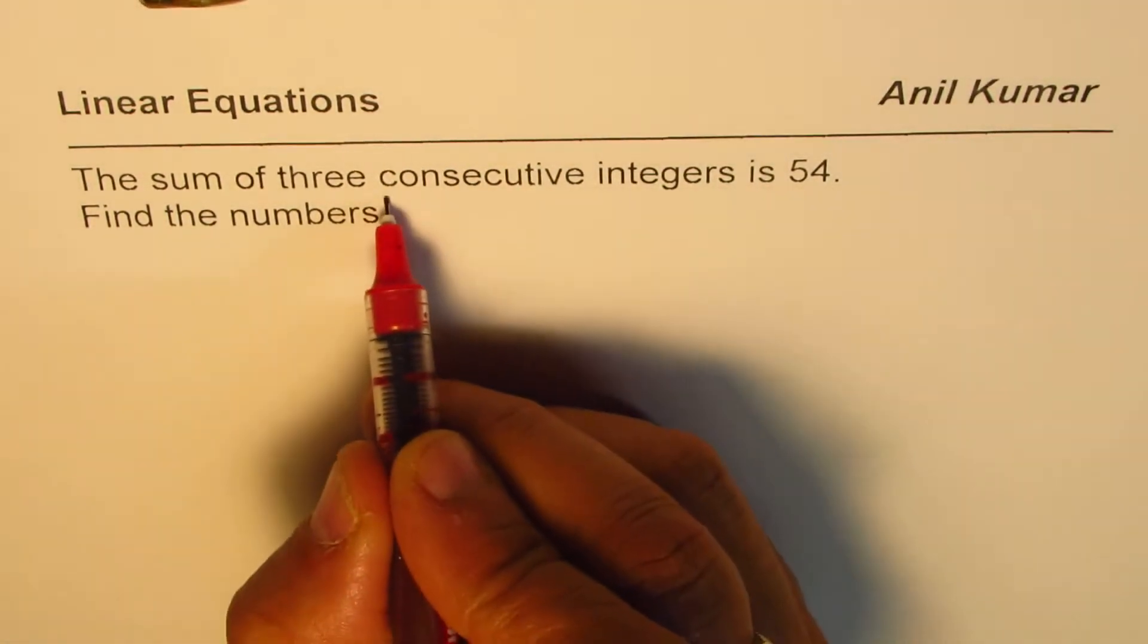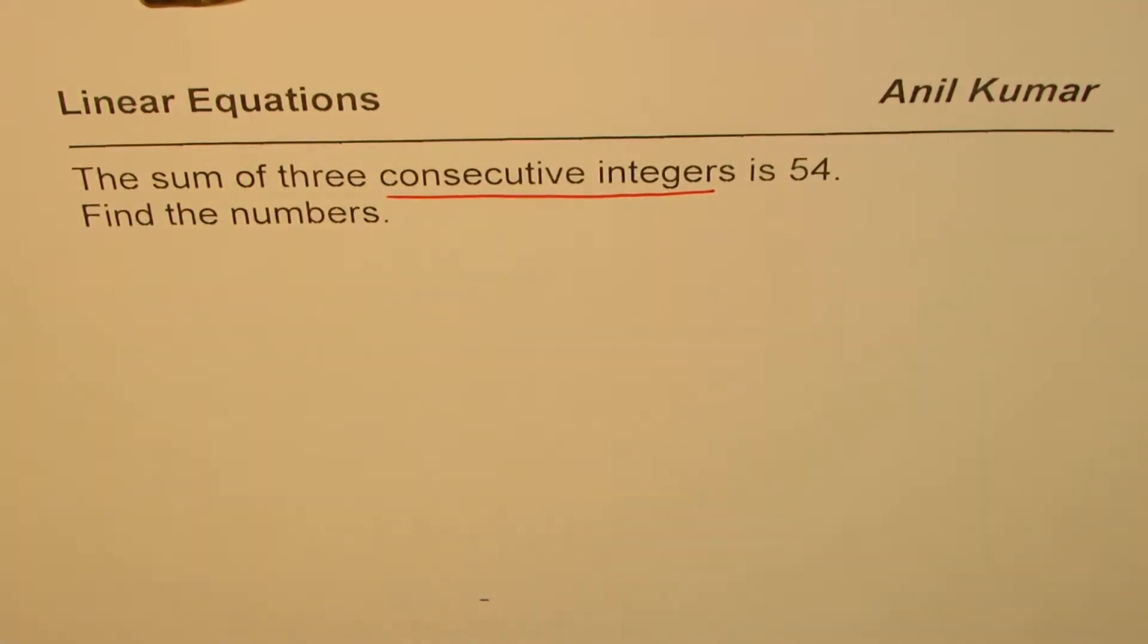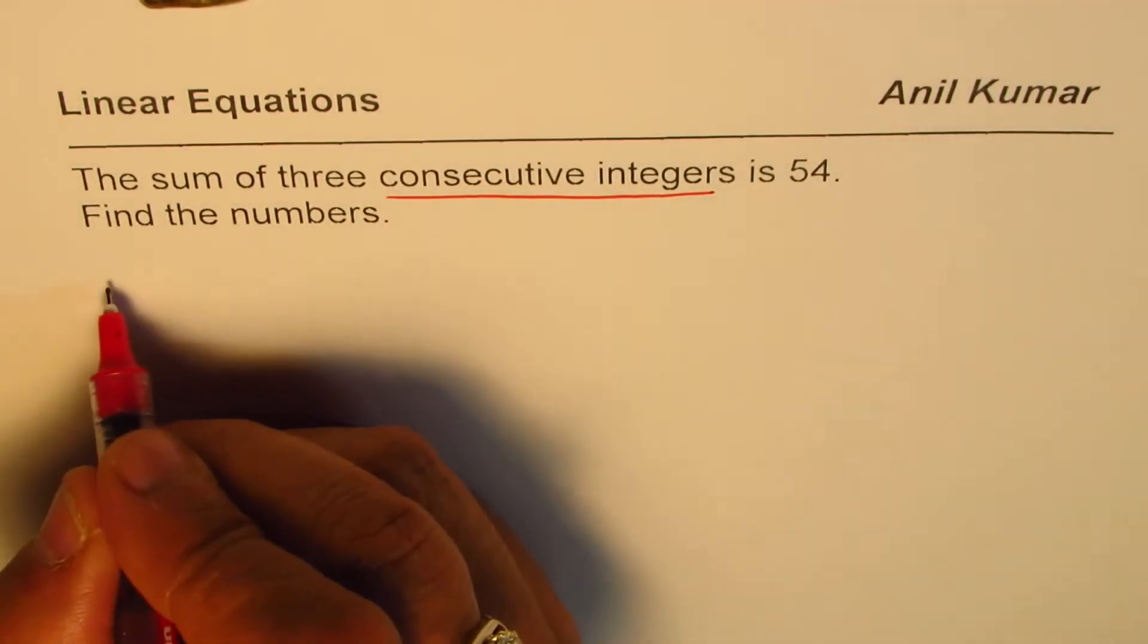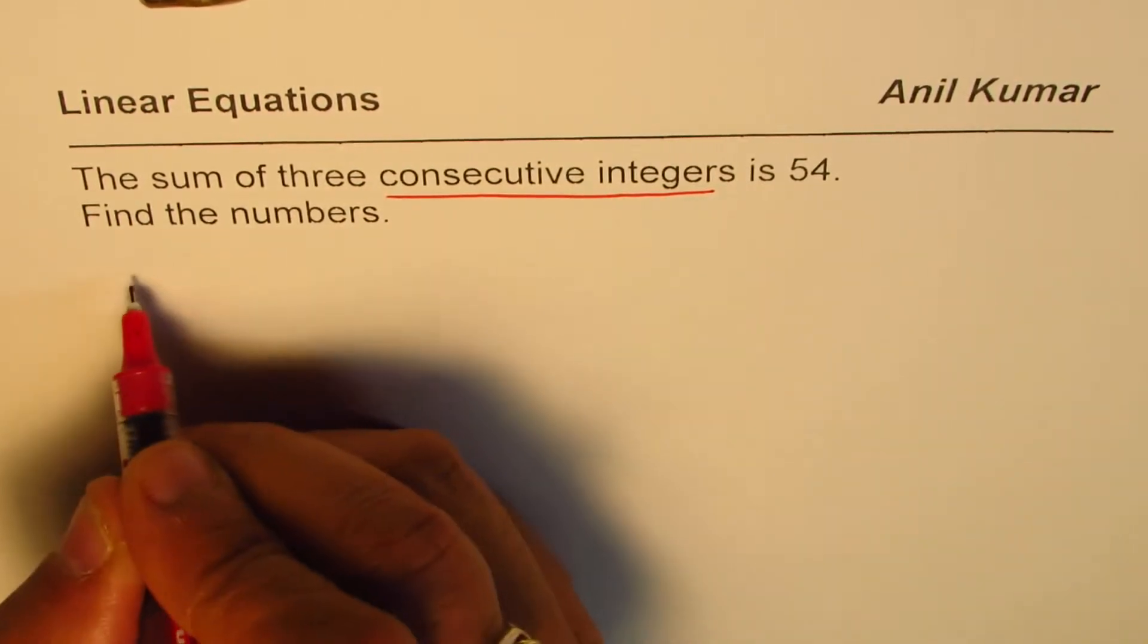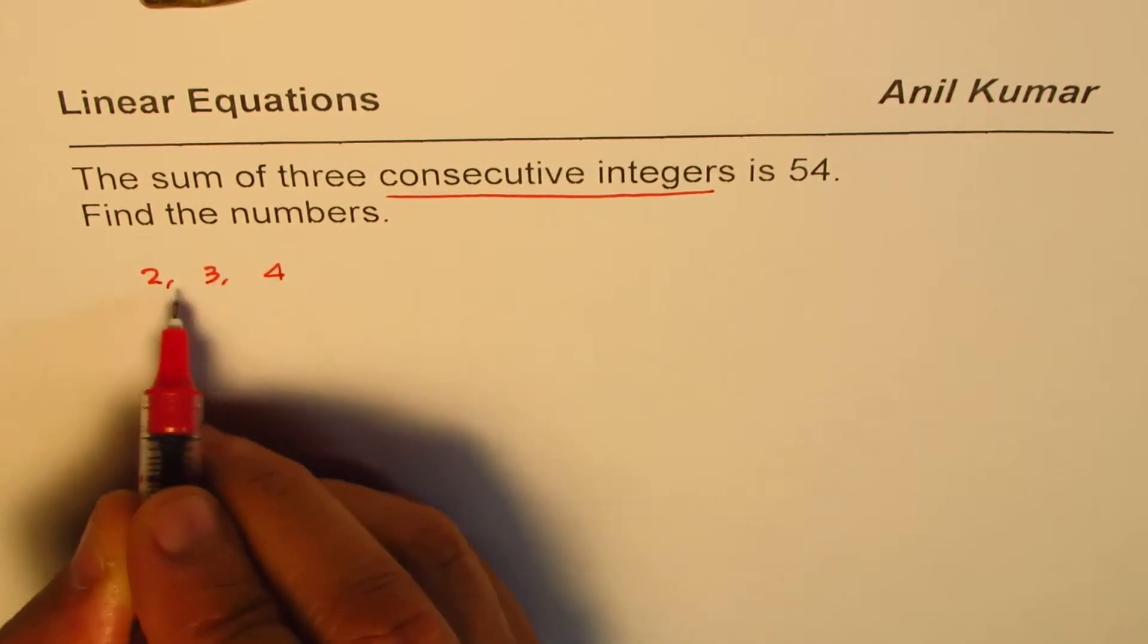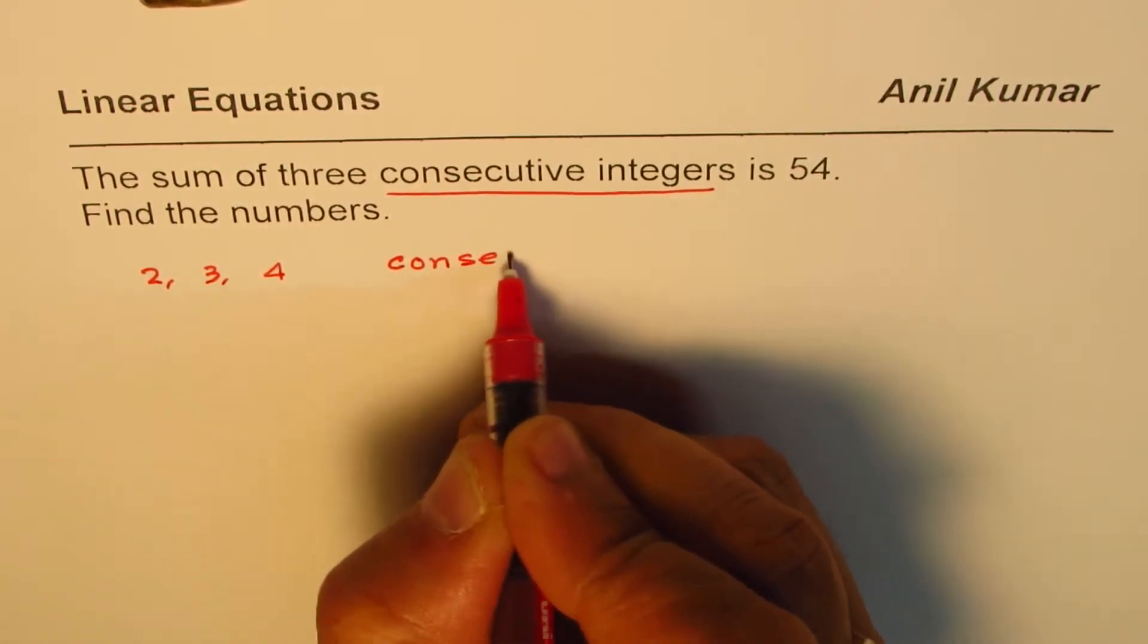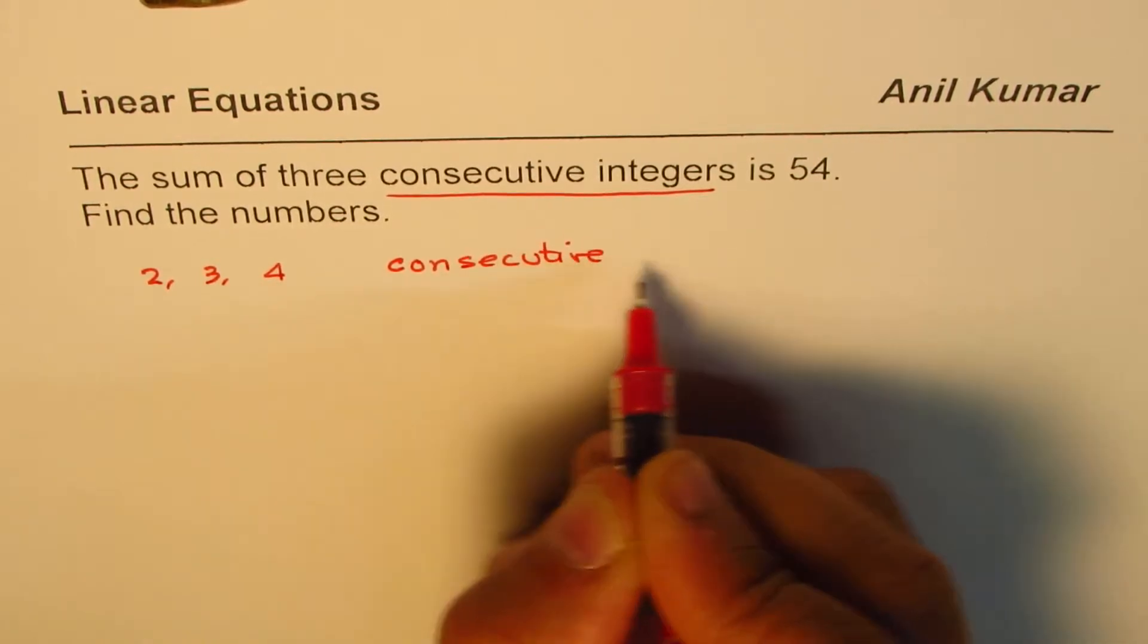Now, what are consecutive integers? This is a term which is not very clear. Consecutive integers are integers which come one after the other. For example, we have numbers 2, 3, 4. So these are consecutive. These are examples of consecutive integers.